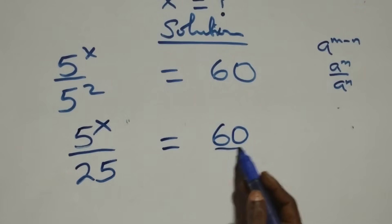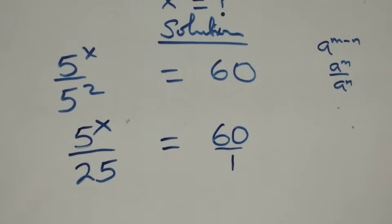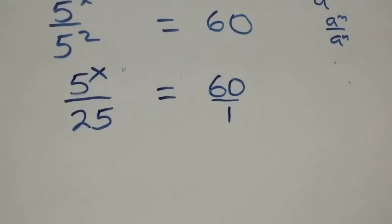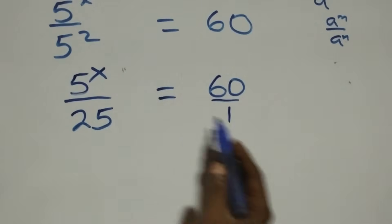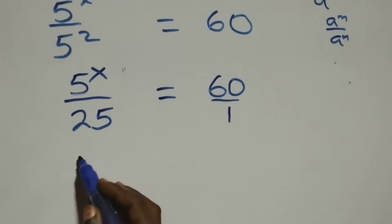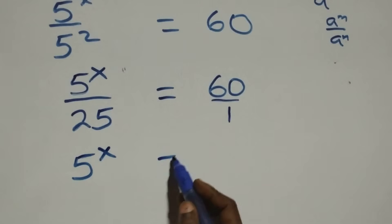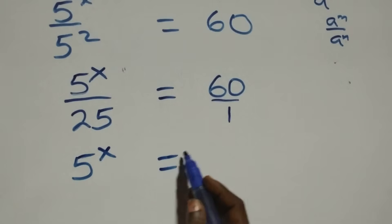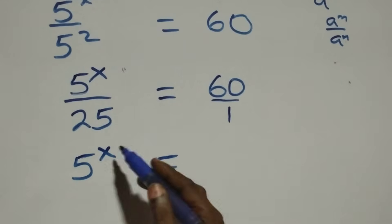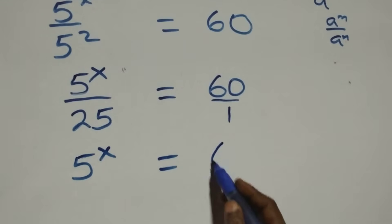That is the same thing as 60 over 1. Then if we cross multiply, 5 raised to power x times 1 is 5 raised to power x, and that equals 60 times 25.